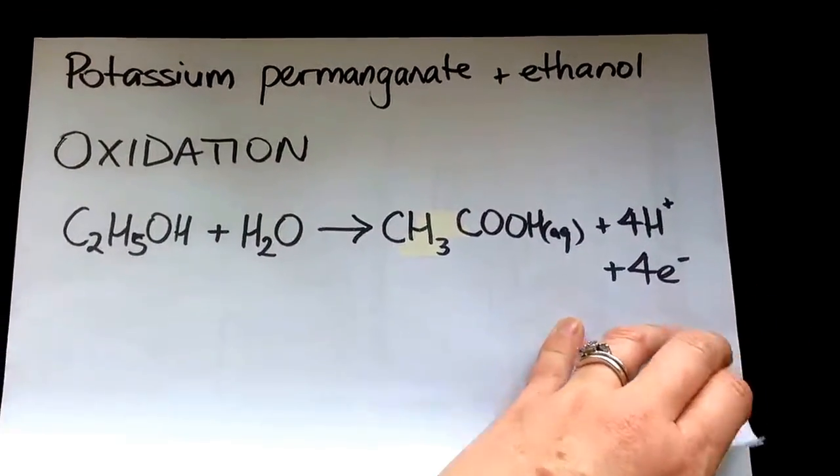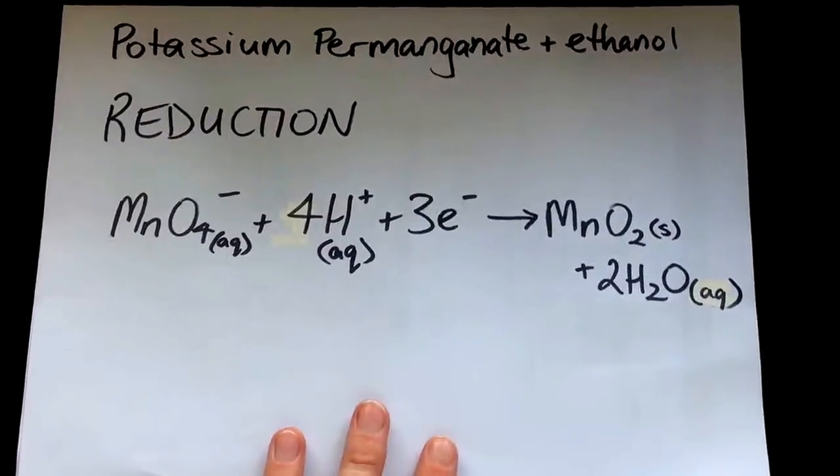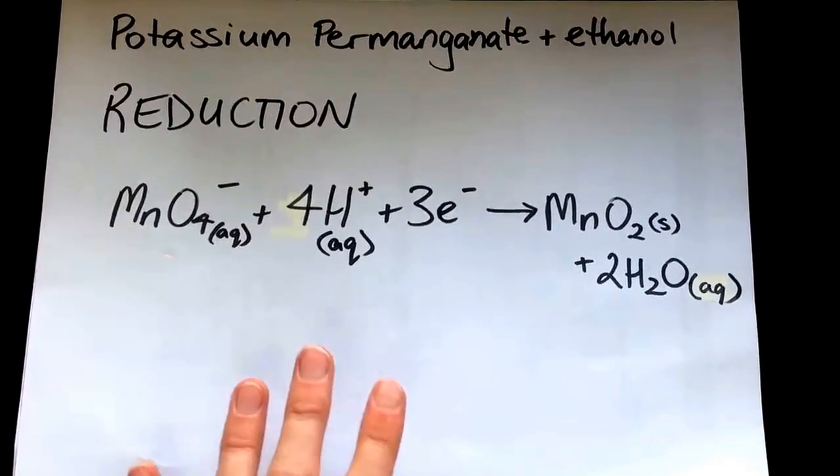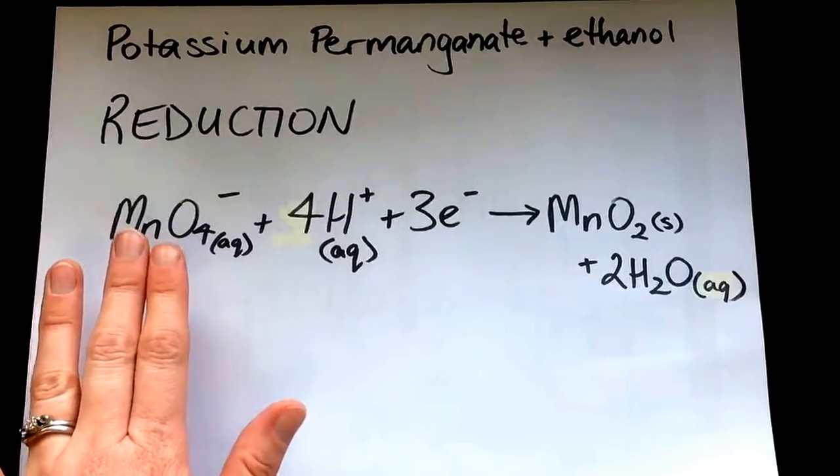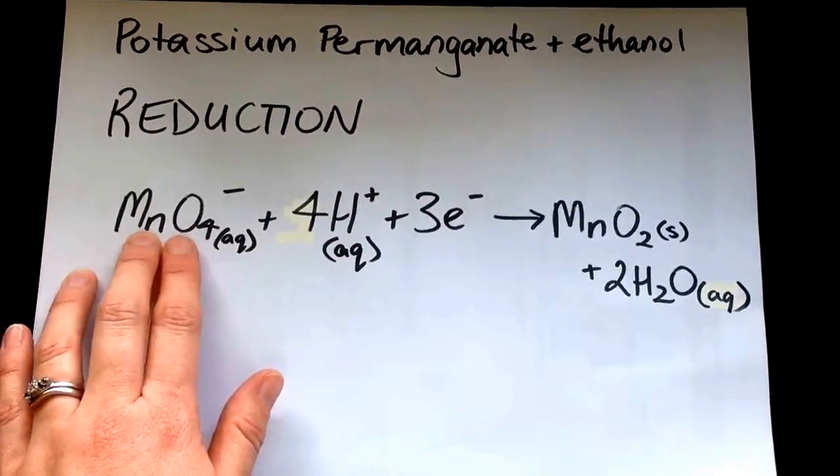Remember, this is a half equation, not the full equation yet. So the next one is our potassium permanganate and ethanol. And this is the reduction one. So here you have the permanganate, which is...